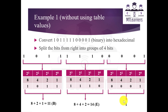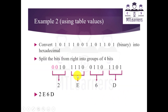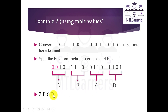Both methods are easy and you can use either one. Now let's look at another example: convert the binary number 1011001101101101 into hexadecimal. The first step is to split the bits from the right into groups of 4 bits. After splitting, you can see the last group has only 2 bits, so add two zeros on the left to complete the 4-bit group. Using the table values, the answer is 2E6D, which is the hexadecimal equivalent of this binary value.